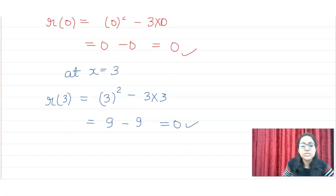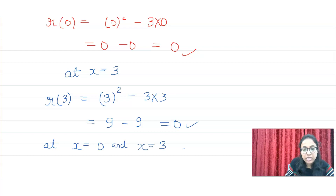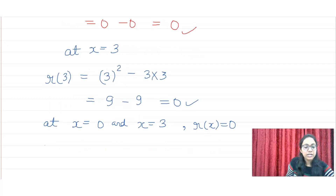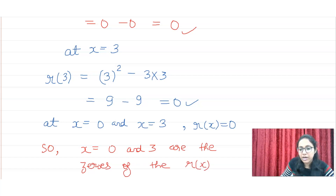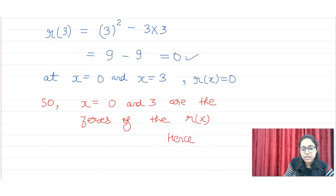Hence we can say that at x = 0 and x = 3, R(x) = 0. So x = 0 and 3 are the zeros of R(x), which is our polynomial given. Hence verified.